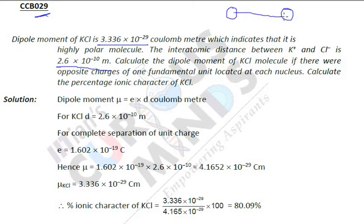The distance between them is given as 2.6 × 10⁻¹⁰ and this charge is two electron charges. So we are talking about this question, and we need to calculate the percentage ionic character of KCl.